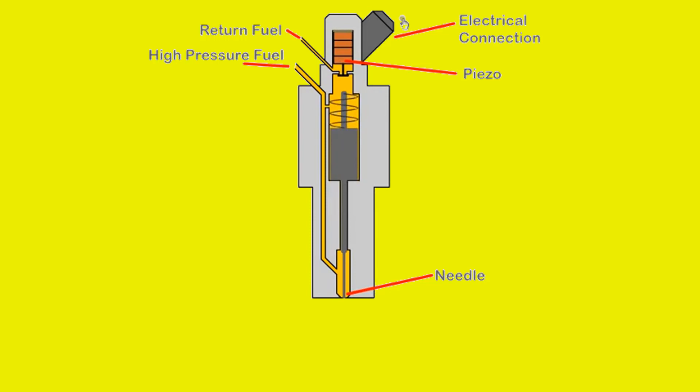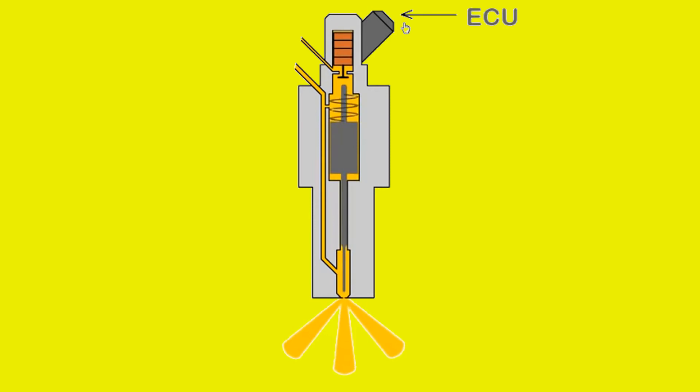When the crystal de-energizes and the valve closes, the high pressure diesel closes the injector. In a modern car there might be three phases of injection: pre, main and post-injection. This provides control over fuel, reducing noise and increasing power and efficiency. The pressure in the diesel common rail system can be up to 1500 bar.